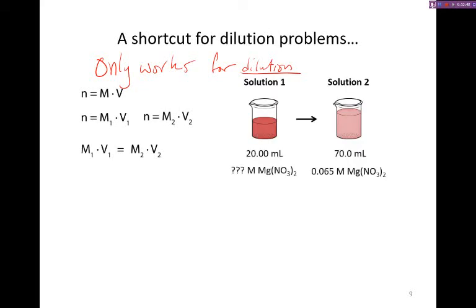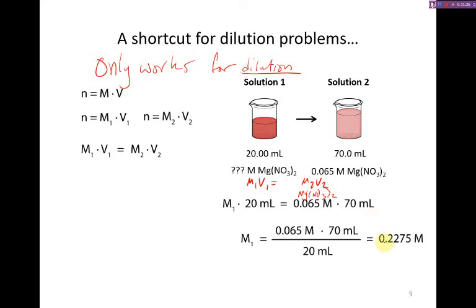So let's say that we've got 20 milliliters of some unknown concentration, and when we diluted it to 70, we know its final concentration. We want to know the initial. We can set that equal to M1 V1 equals M2 V2, where our initial concentration is unknown. Our initial volume is 20. The final concentration is 0.065 molar of the magnesium nitrate, and the final volume is 70. You can then rearrange and solve for the original concentration of magnesium nitrate. And this should make sense because we know we have to start with a more concentrated solution, and our concentration of the original is indeed higher than the final.